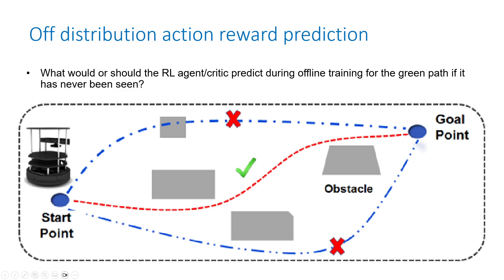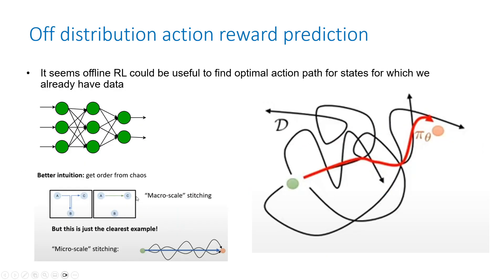To visualize this: say you get data from a mobile robot covering certain paths, but the optimal path goes through a region not covered by your data. When you train offline, the agent needs to take actions outside the collected data, so you have no way to predict whether that path is best or worst. That's the distribution shift problem — offline reinforcement learning training tries to push down the possibility of going out of distribution.